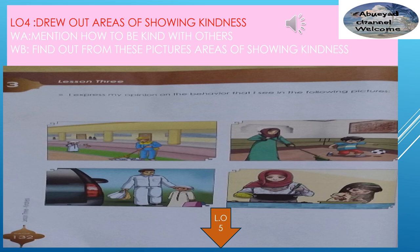The fourth learning objective: draw out areas of showing kindness. The first group, the green one, will mention how to be kind with others — write at least three things. The second group, the orange one, will find out particular areas and forms of showing kindness. You have three minutes. Start.